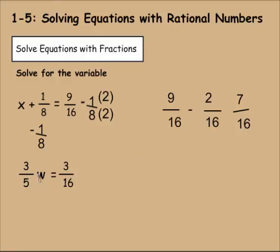We have 3/5 times w equals 3/16. So we're multiplying 3/5 times w, and we have 3/16 over here. So if we're going to be getting rid of this multiplication, we would have to divide by 3/5 on both sides. So we do dividing by, and then 3/5. But remember, when we divide fractions, we need to multiply times the reciprocal. So we need to turn 3/5 into 5/3.